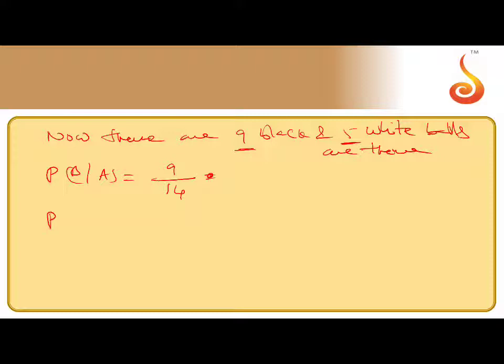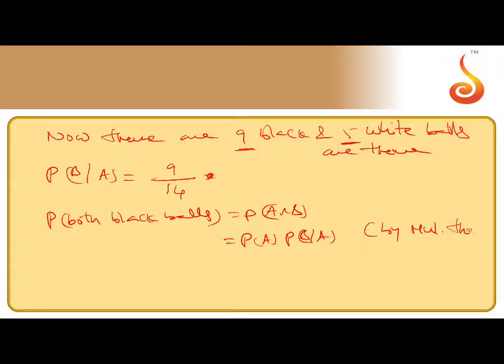Therefore, probability of both black balls, that is probability of A intersection B, equals P of A into P of B given A by multiplication theorem.